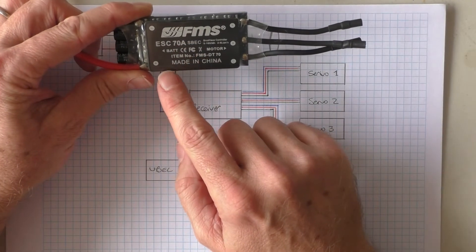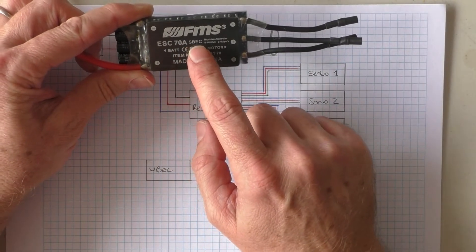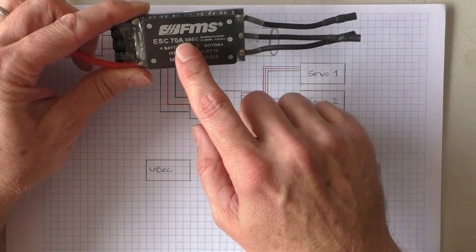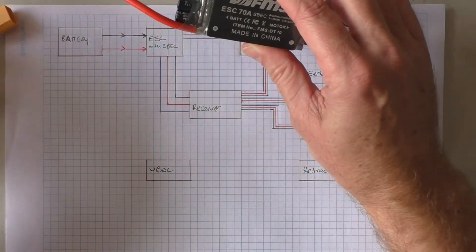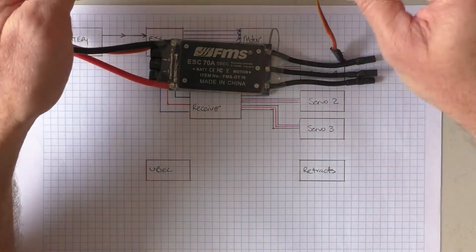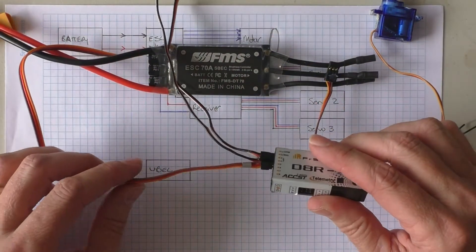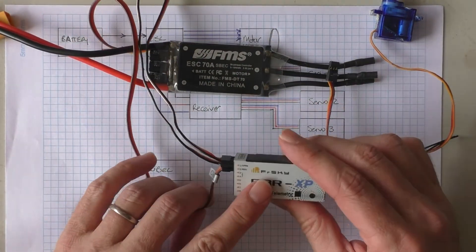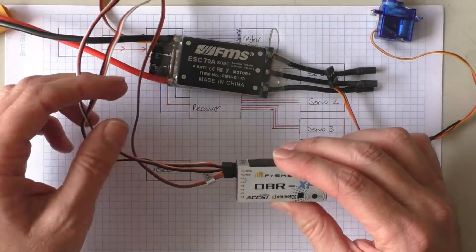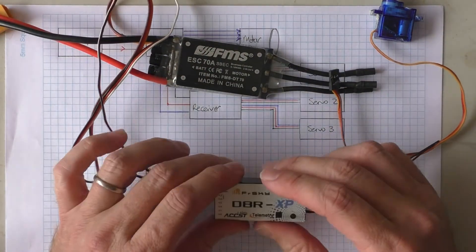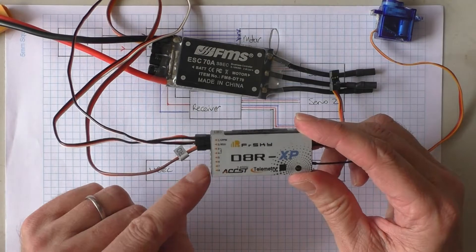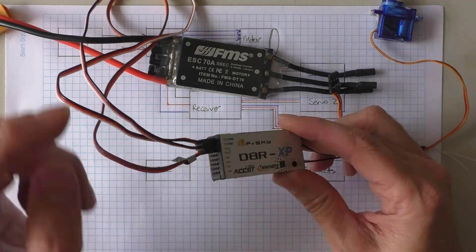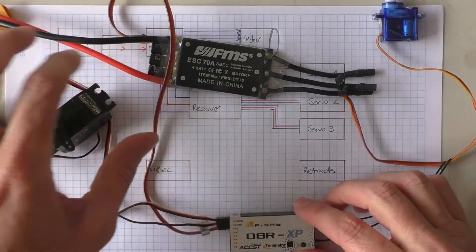Within the ESC is an SBEC, which is a switching battery eliminator circuit. What that does is this cord provides power to your receiver, and it also provides power to the servos.